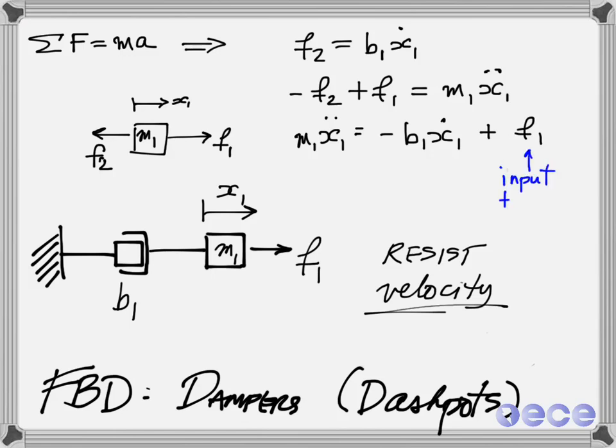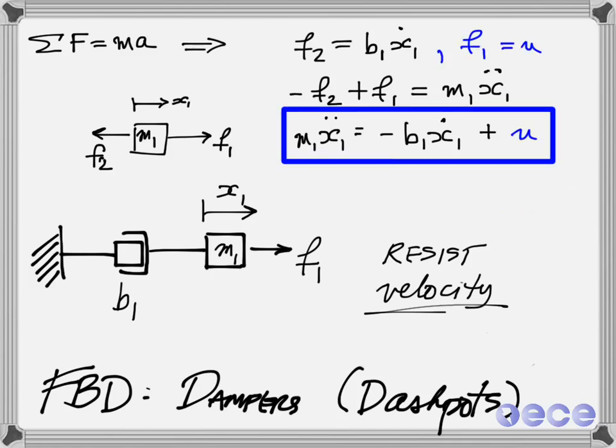And this is an input force meaning that there's no physics that it obeys right now. It's just some force that magically happens. So in a control system, we typically label this as an input, and a very common abbreviation for that input is U. So here we have some mass times X1 double dot is minus B1, X1 dot, plus U.